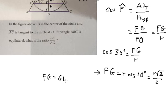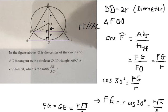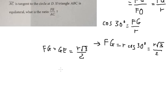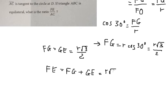We have FG equals R times the square root of 3 over 2. Since FG equals GE by symmetry, FE equals FG plus GE, which gives FE equals R times the square root of 3.